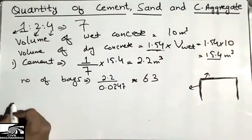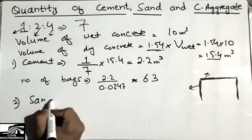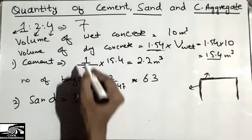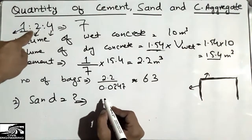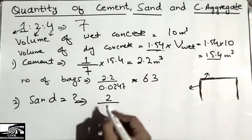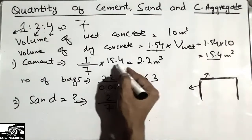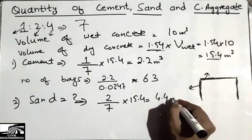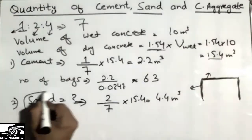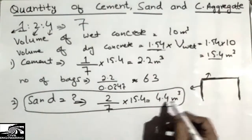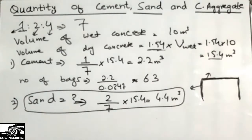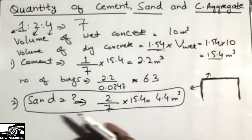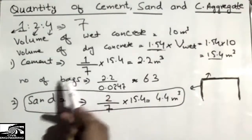Now for the sand quantity: we divide the sand ratio of 2 by the total ratio of 7, then multiply by the dry volume of 15.4 cubic meters. This gives (2/7) × 15.4 = 4.4 cubic meters of sand used in this frame structure in dry condition. Similarly, knowing the volume of one bag of sand, we could find the number of bags.